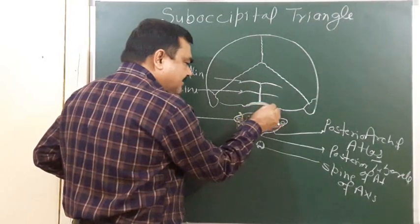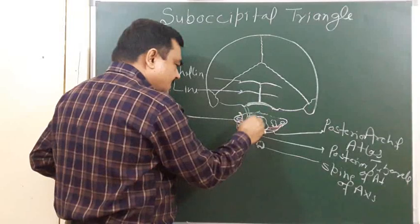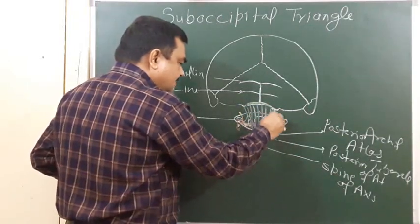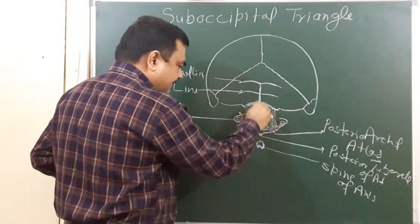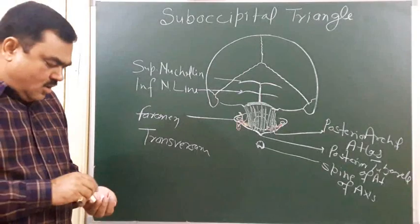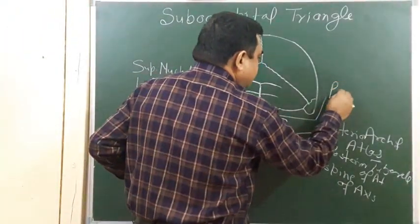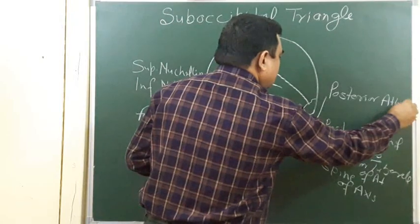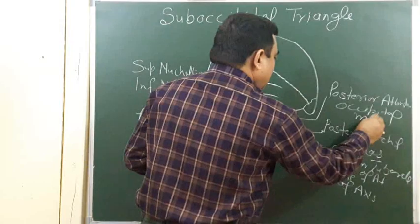This is the posterior margin of the foramen magnum. From here to here, a membrane is present. That membrane is known as the posterior atlanto-occipital membrane.